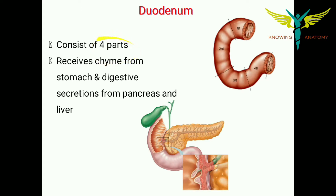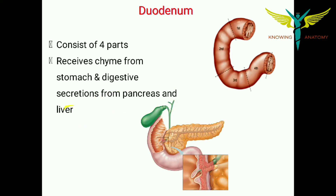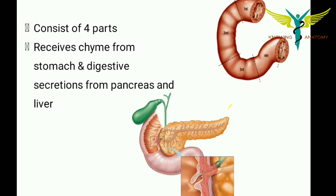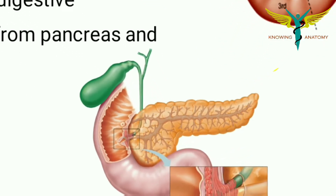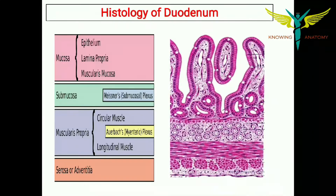It ends at the duodenojejunal junction. The duodenum contains four parts: the first part, the second part which is the longest, the third part, and the fourth part. The duodenum receives chyme from the stomach and digestive secretions from the pancreas and the liver. The bile duct and the pancreatic duct drain into the second part of the duodenum.